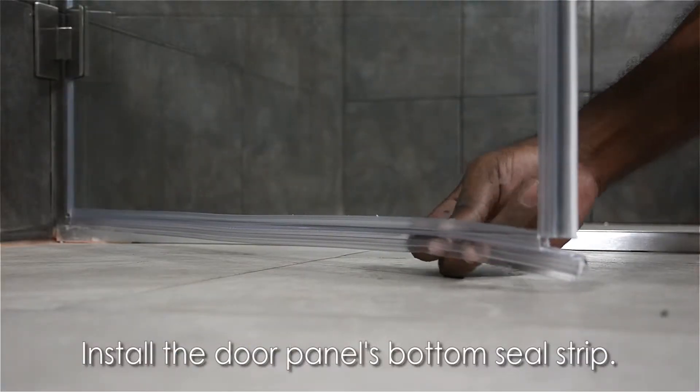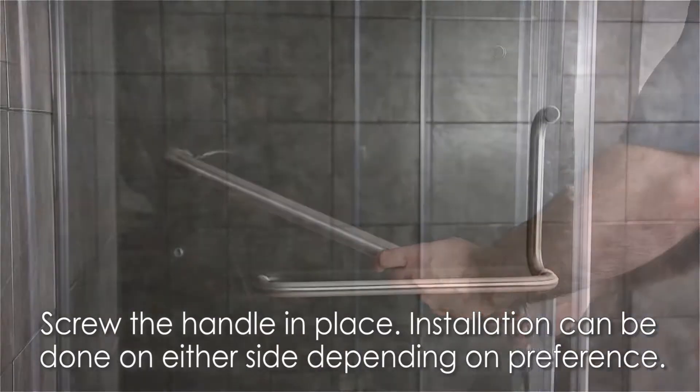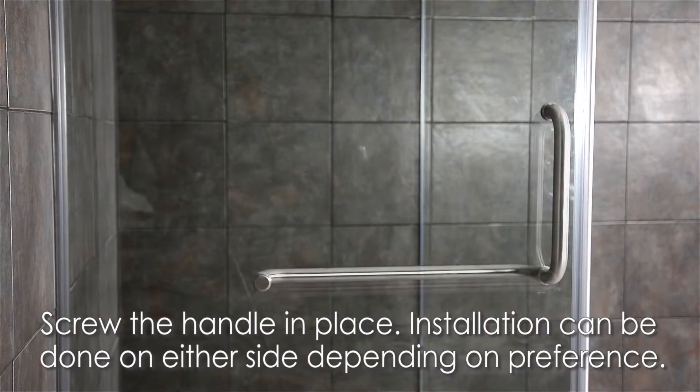Install the door's bottom seal strip. Then, screw the handle in place. Installation can be done on either side depending on your preference.